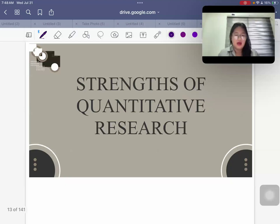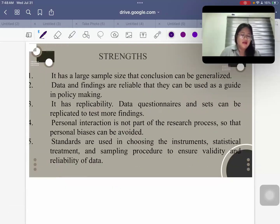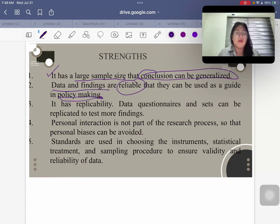So we have the strengths of quantitative research. So again, it has a large sample size, hence generalizable. Compared to qualitative, you can't really generalize because the sample size is not really relatively large. Hence, you cannot say that it's representative of the population. But for quantity, the larger the sample size, the better, the more generalizable it is. Then data and findings are reliable. They can be used for policymaking, again, because they would represent the population. It can also be replicated, the data questionnaires and sets can be replicated to have more findings, perhaps in a different locality. Personal interaction is also not part of the research process. So there's no space for personal biases.